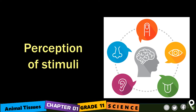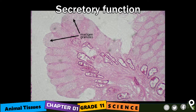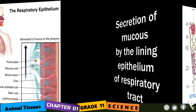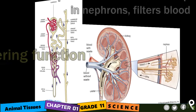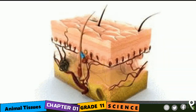Perception of stimuli is the next function — the epithelium of the tongue and nose detects taste and smell senses. Secretory function — secretions of mucus by the lining epithelium of the respiratory tract. Filtering function — the epithelium of Bowman's capsules in the nephron filters blood.